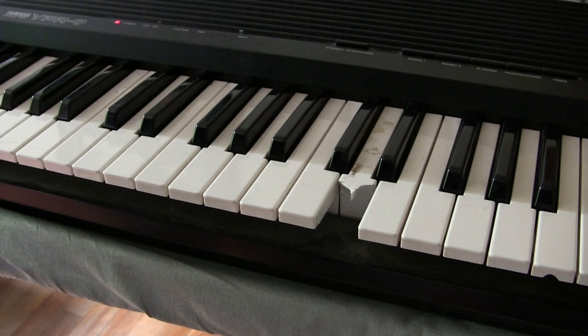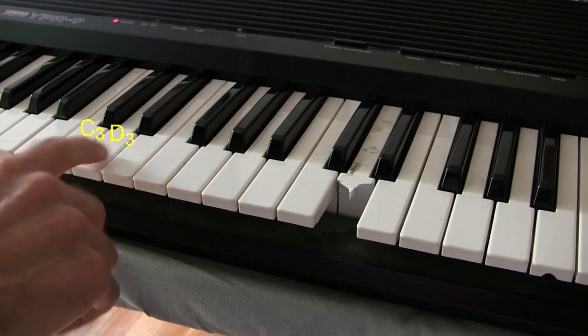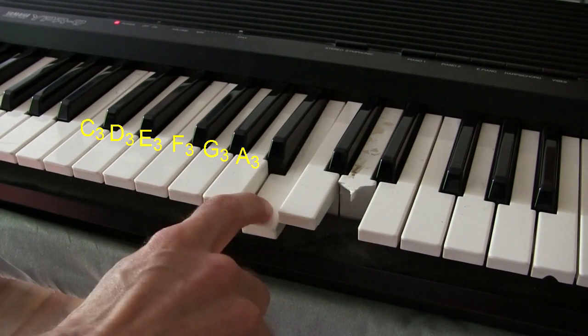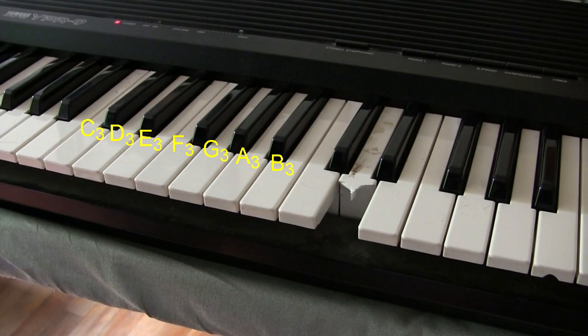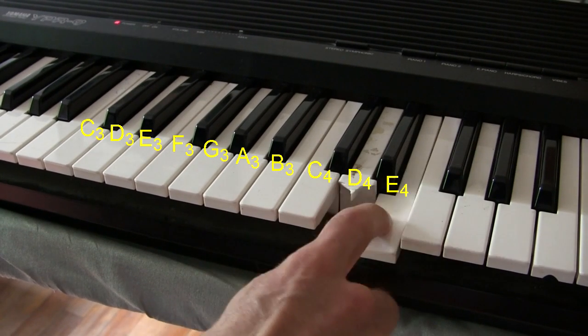For those unfamiliar with musical notation, the notes are given various letter names in combination with other symbols, though I'm using just the simple letter ones. Looking on my piano I'm using C, D, E, F, G, A, B, and then repeating the letters one octave higher, C, D, E, and F.